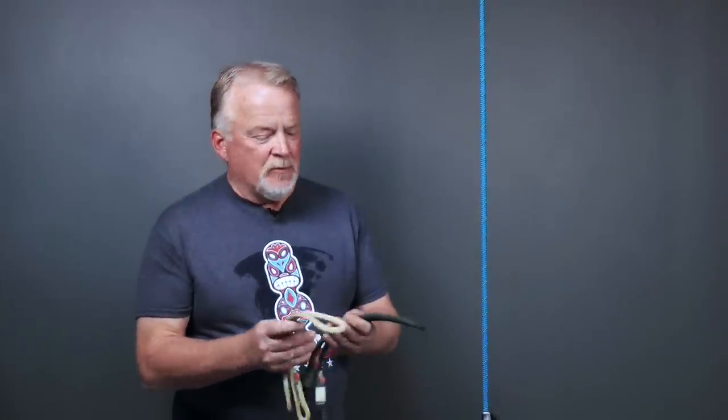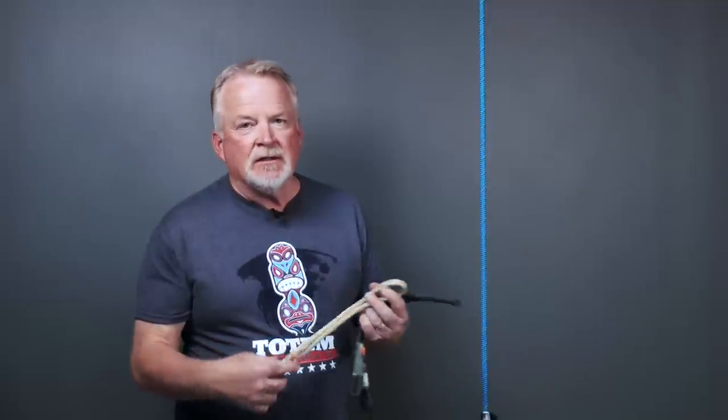In today's video, we're going to talk about the VT Prusik. The VT Prusik is a special-made product designed by yours truly, manufactured by Blue Water Ropes, that's available in both black and tan.